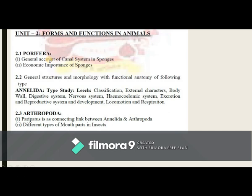The second unit is Forms and Functions in Animals, subdivided into three subunits. In subunit 2.1, you have to study Porifera: the general account of the canal system in sponges and the economic importance of sponges. In subunit 2.2, you study the general structure and morphology with functional anatomy of phylum Annelida, with the type study of leech — Hirudinaria granulosa. Topics include classification and external features.